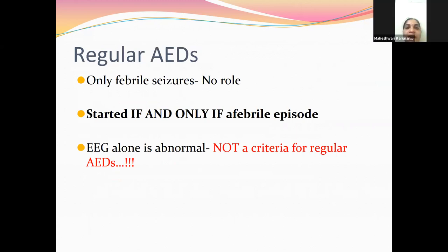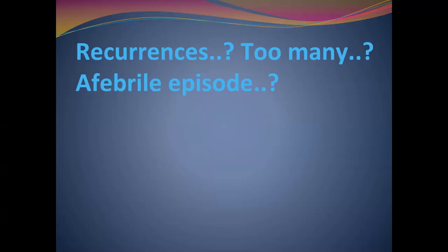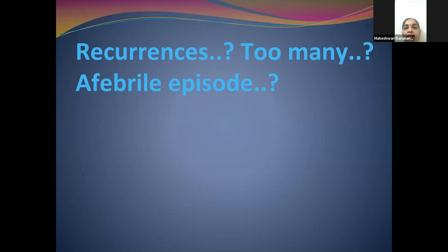Regular anticonvulsant therapy has no role in febrile seizures — it is used only if there are afebrile episodes. EEG alone should not be used as criteria for starting anticonvulsants. If recurrences are too many, too frequent, prolonged, or afebrile, we have to think of febrile seizures associated with genetic syndromes.